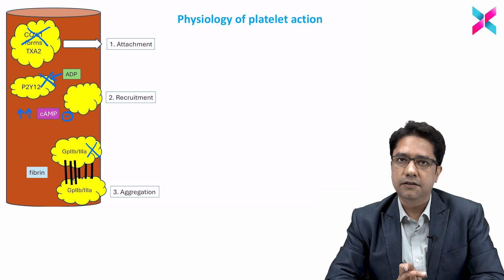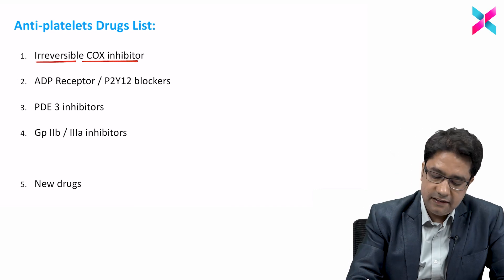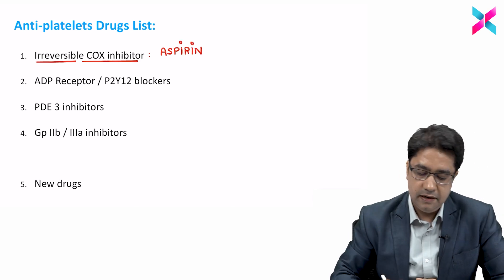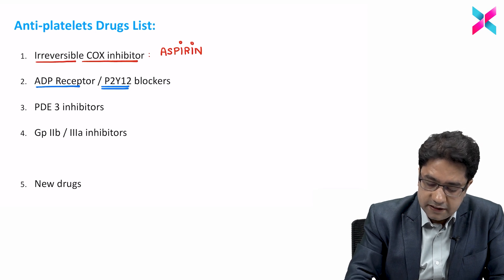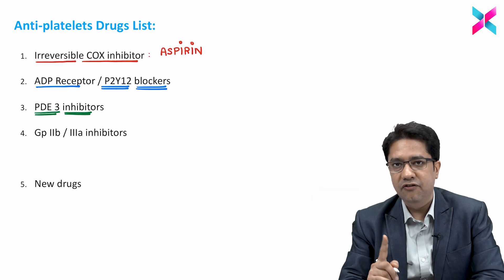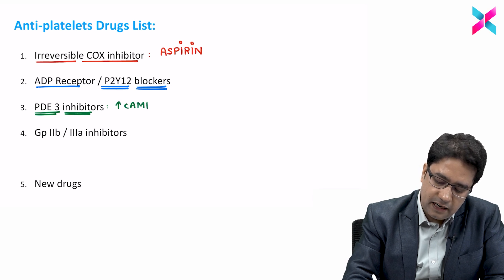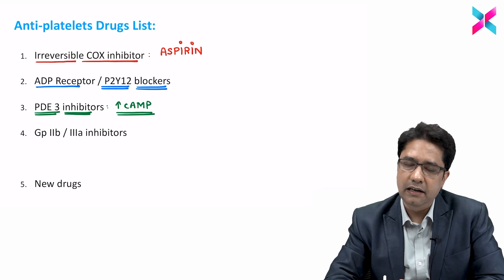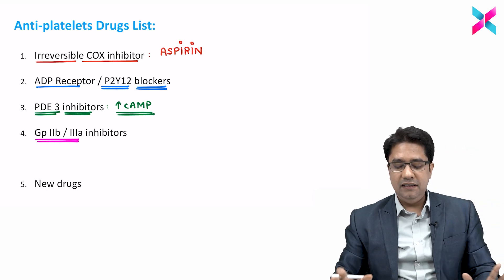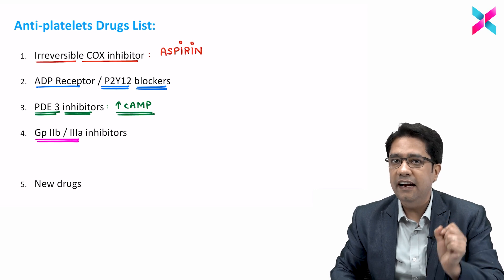The list of antiplatelet drugs: First, an irreversible COX inhibitor — the drug is aspirin. Second, ADP receptor (P2Y12 receptor) blockers. Third, phosphodiesterase-3 inhibitors. Remember, the phosphodiesterase enzyme degrades cyclic AMP, so a phosphodiesterase-3 inhibitor will increase cyclic AMP levels, thereby inhibiting platelet recruitment. Fourth, GP2B3A inhibitors. Among these four drug classes, which is the anti-aggregant drug that inhibits aggregation of platelets?